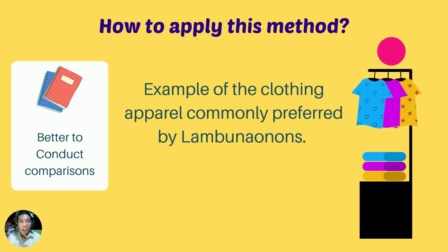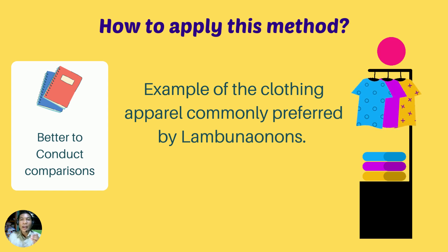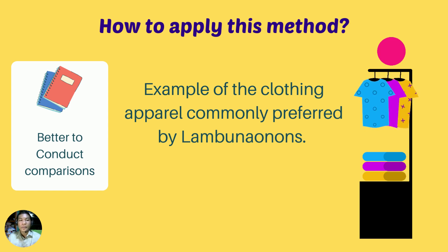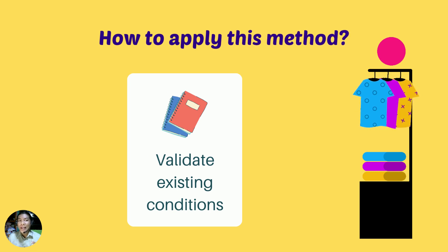Next is better cross-comparisons. For example, take the clothing apparel commonly preferred by Lampunaunans. The same demographic questions like age, income, and gender can be used in creating surveys that measure the clothing apparel commonly preferred by Lampunaunans. This will help you know and understand what parts of the apparel are appealing to your respondent population. You should also have comparisons, and you need to validate existing conditions — any prevailing conditions that may be predominant in a certain group or population.